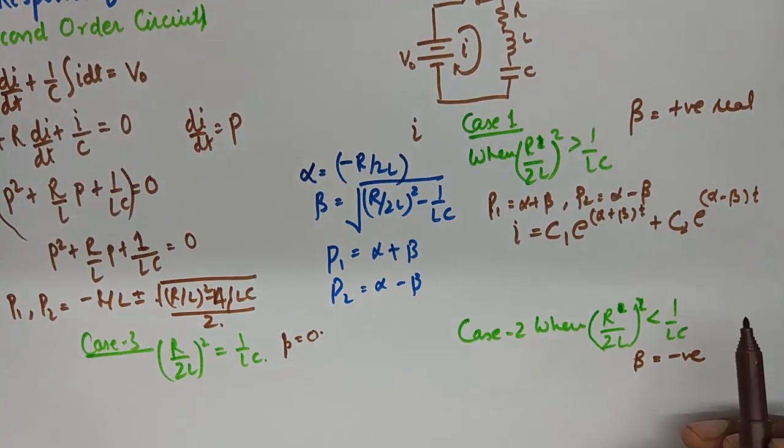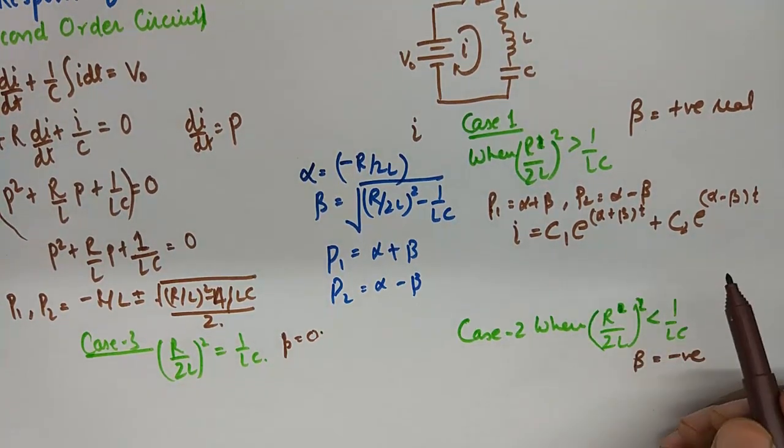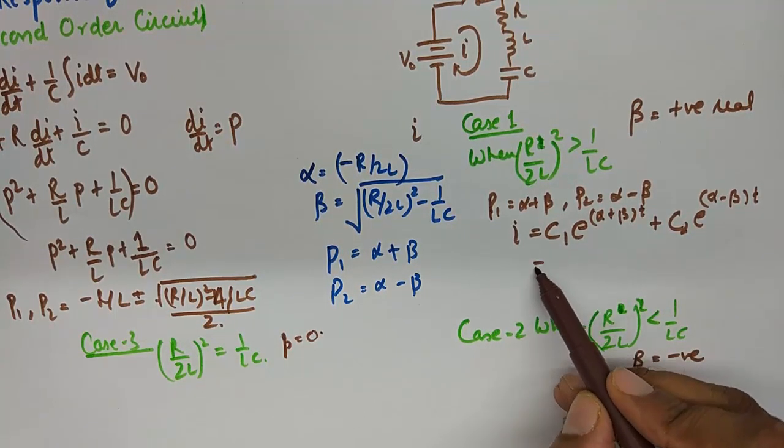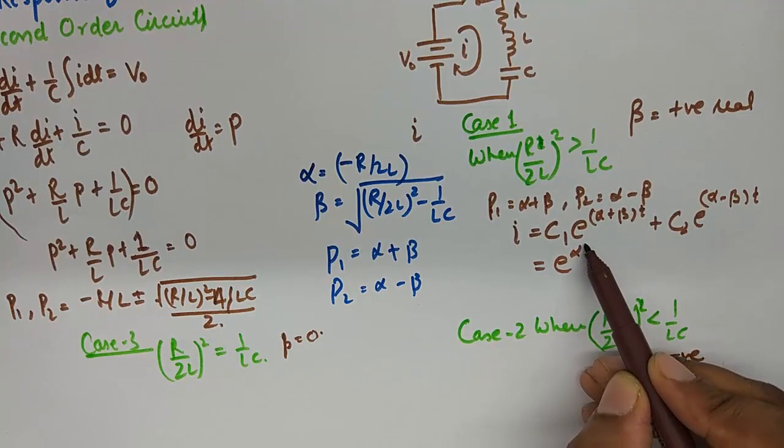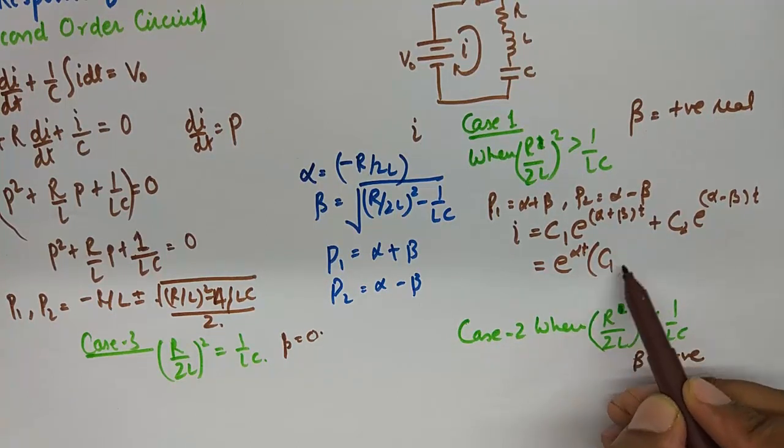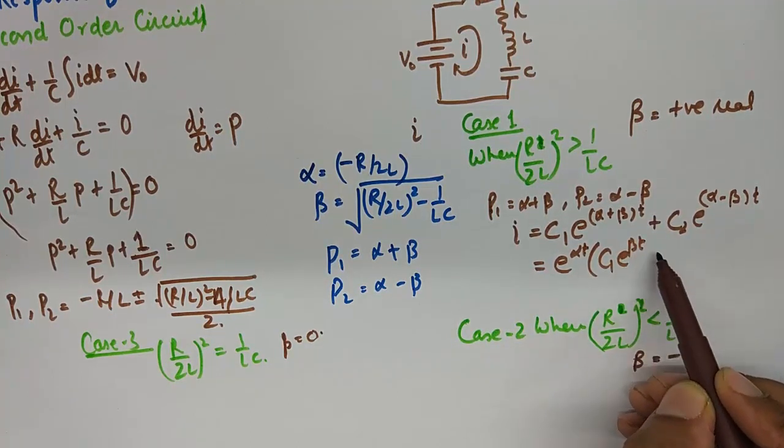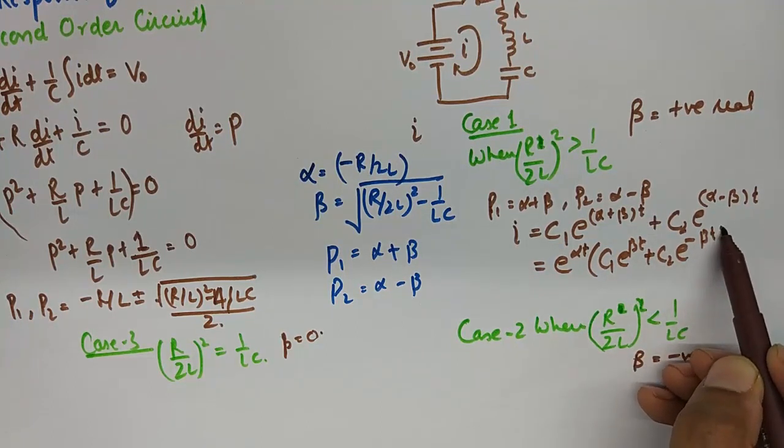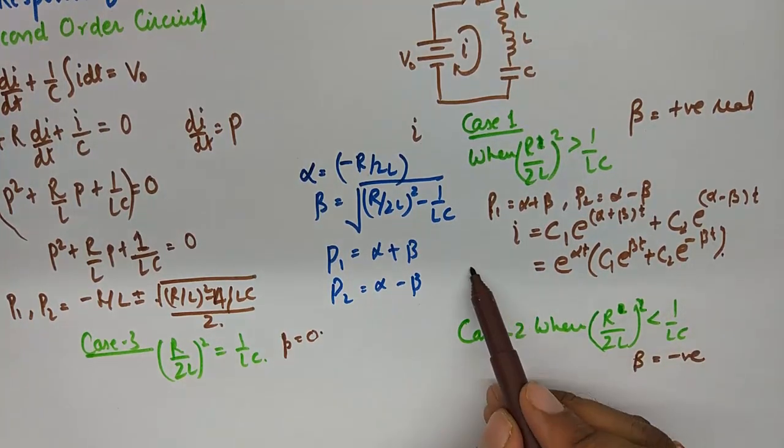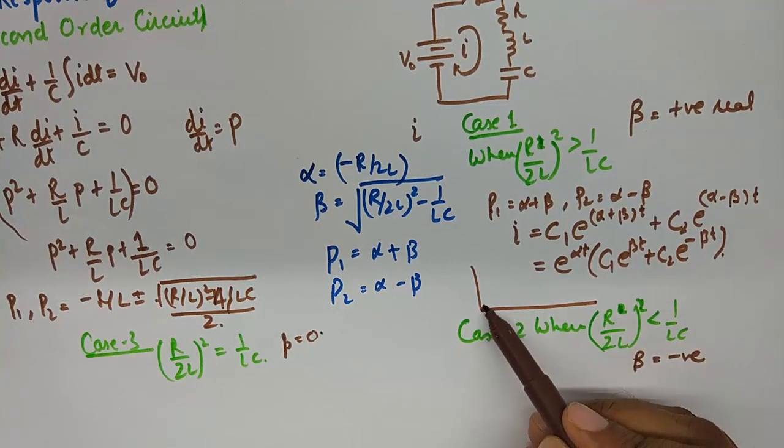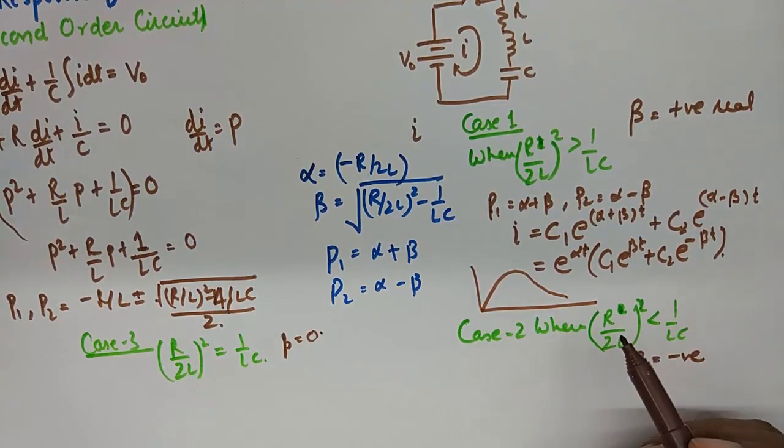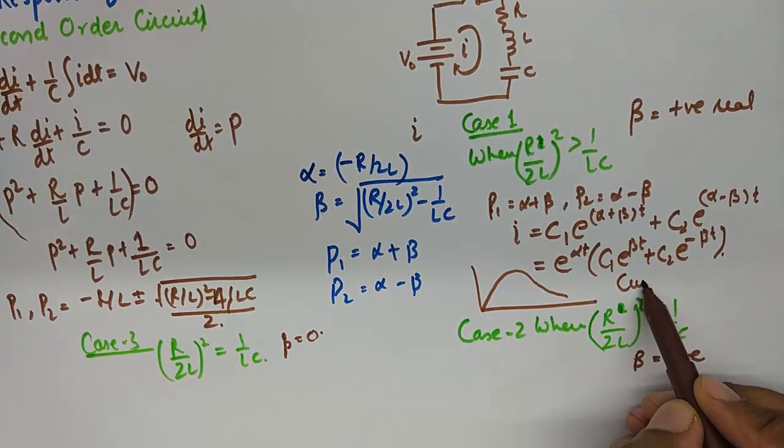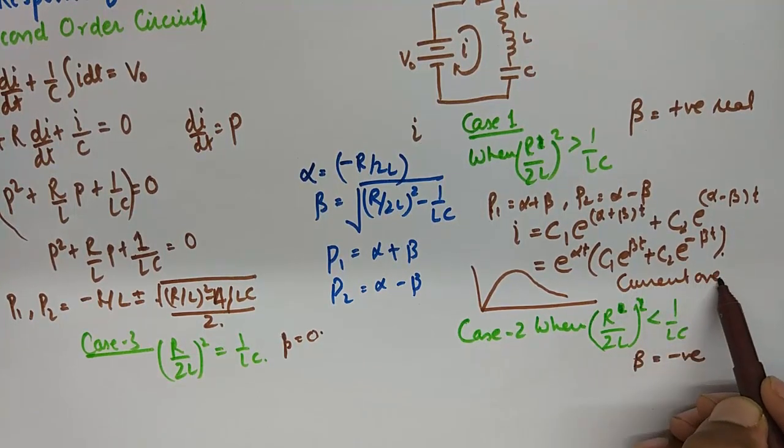Alright, and a little bit of rearrangement will bring E raised to the power alpha outside. So we can write it down as E raised to the power alpha T, C1 E raised to the power beta T plus C2 E minus beta T. And what we are left with is the response and its current over damping.